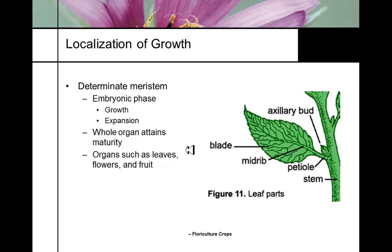Determinate meristems have an embryonic phase — they grow and expand, and once the entire organ gets to its mature size, the embryonic phase ends and meristematic development ceases. That's like a determinate tomato versus an indeterminate tomato: a determinate tomato grows, flowers, sets fruit, and is done; indeterminate grows forever. Determinate meristem tissues are organs like leaves, fruit, and flowers.